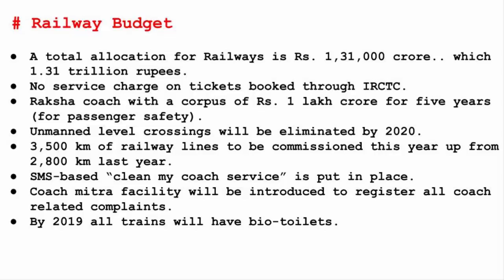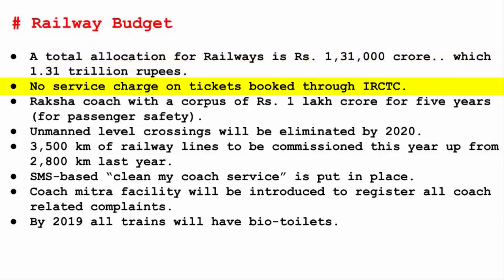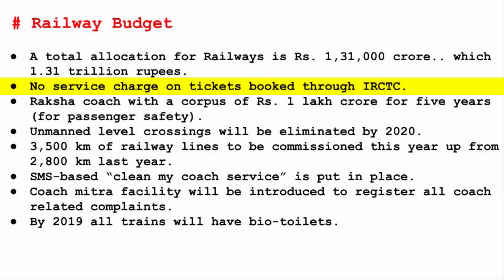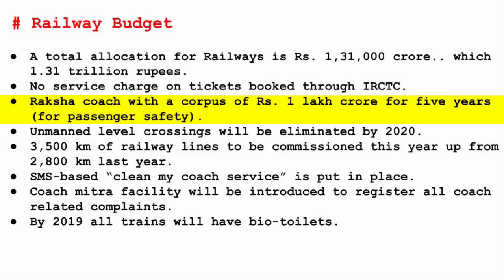Now we will look at the railway budget. This is the first time the railway budget has been included in the Union Budget, and it will continue to be so hereafter. A total allocation for railways is Rs. 1,31,000 crore for development of structures, systems, and facilities. Since Indian Railways is among the world's largest rail networks, the development cost is correspondingly high. There will be no service charge on tickets booked through IRCTC, incentivizing cashless online booking. A Rashtriya Rail Sanraksha Kosh — a passenger safety fund — with a corpus of Rs. 1,00,000 crore for 5 years has been set up following recent accidents causing heavy casualties.